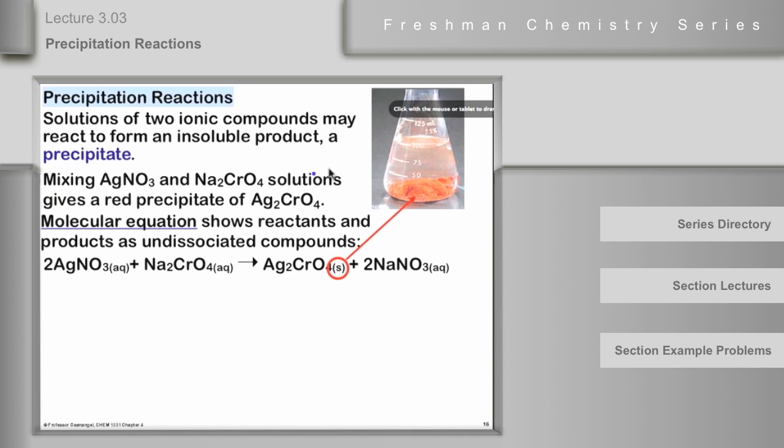This solid represents the precipitate that forms. And in the laboratory, you might at this point filter out that solid. If you were trying to isolate it for some reason, you're trying to make it, you could filter it out. And what we would like to know is a little bit more about why the solid forms, or at least how we can determine when a solid is going to form, and how we can describe the reaction over and above the use of the molecular equation.